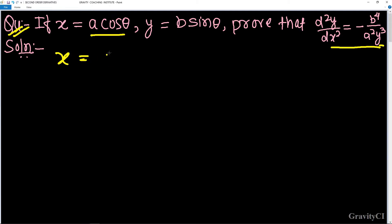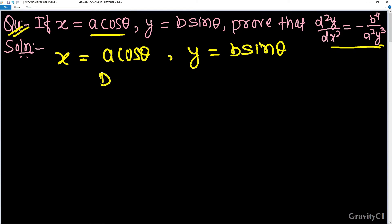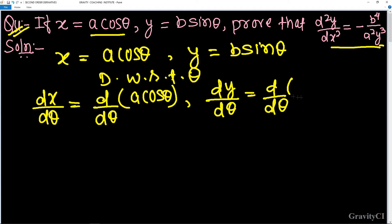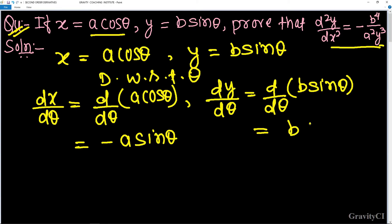Given x equals a·cos θ and y equals b·sin θ. Now differentiate both with respect to θ. We have dx/dθ equal to the differentiation of a·cos θ, and dy/dθ equal to the differentiation of b·sin θ. So dx/dθ equals minus a·sin θ and dy/dθ equals b·cos θ.